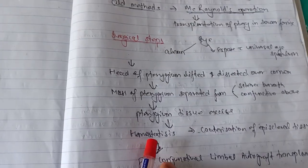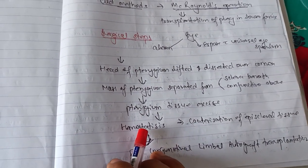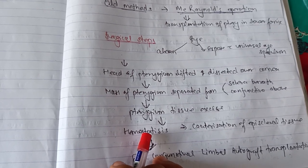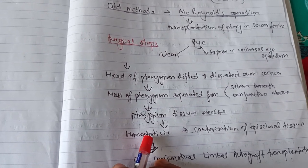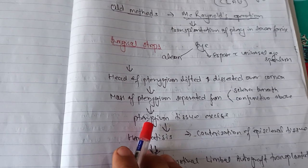This is how we understand the surgical steps of pterygium. Today we understood definition, types, classification, and medical management of pterygium. I hope you understand. If you have any query in your mind, you can ask me in the comment box. Thank you.